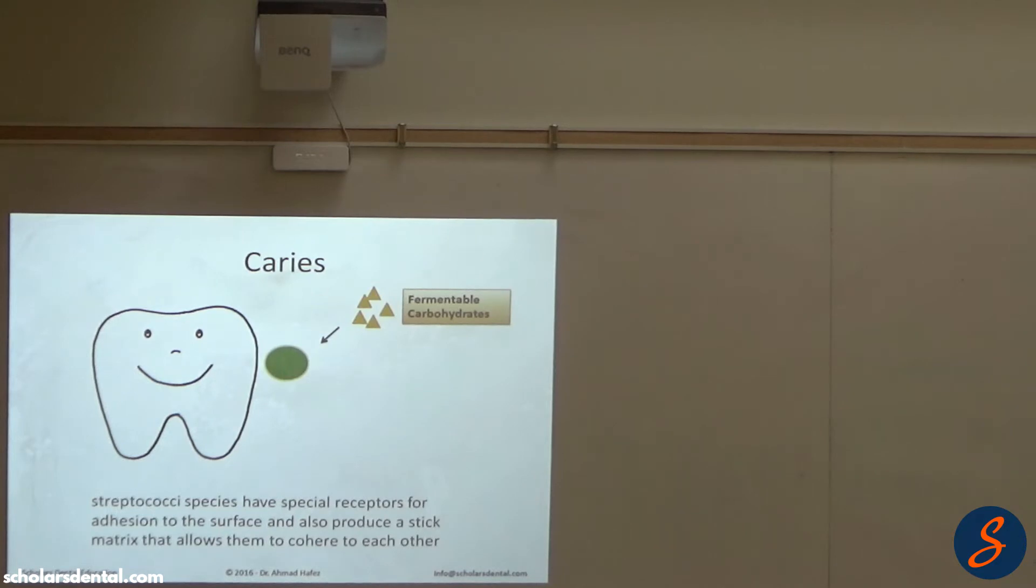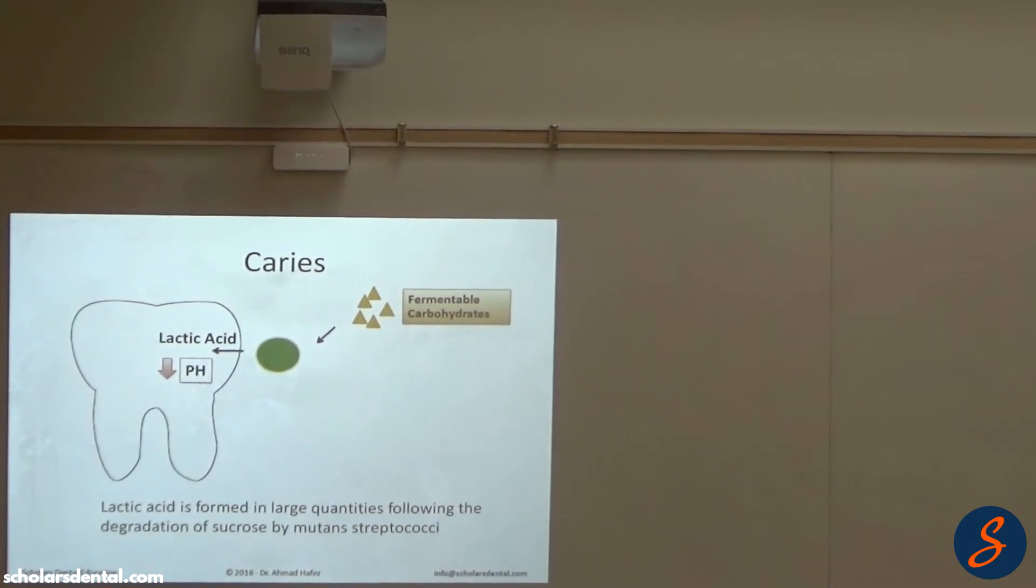Now the bacteria again is getting S-mutans. You're eating fermentable carbohydrates. And S-mutans has byproducts, like us. When we eat, we have byproducts. S-mutans has byproducts as well, which is acidic - lactic acid.